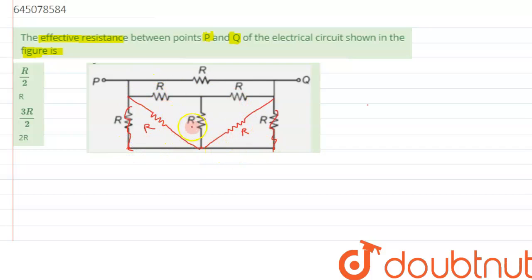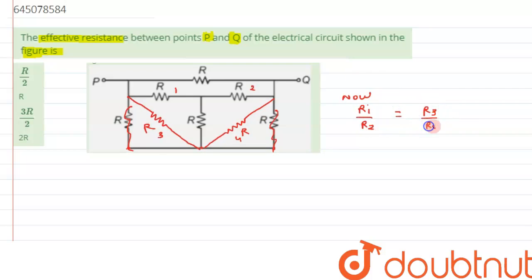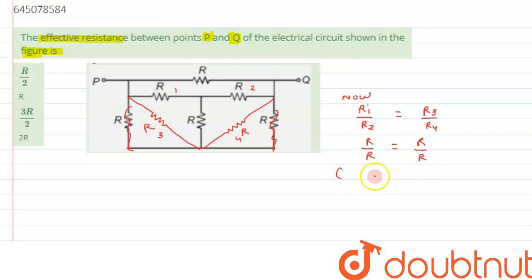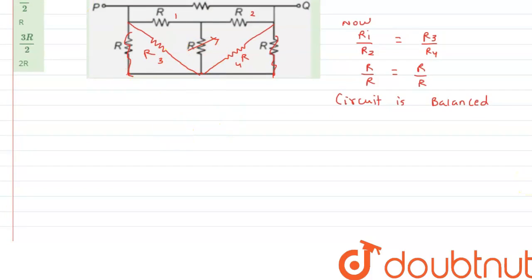Let's label: this is resistance R1, resistance R2, resistance R3, and resistance R4. We can check whether R1/R2 equals R3/R4. If so, the circuit is balanced and the middle resistance plays no role. Checking: R1 is R, so R/R equals R/R — this means the circuit is balanced. Under the balanced condition, the middle resistance can be neglected.